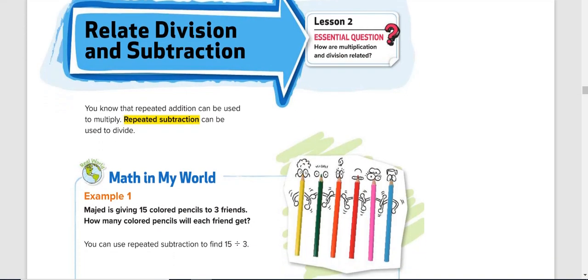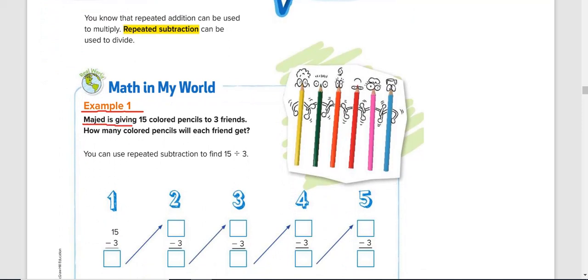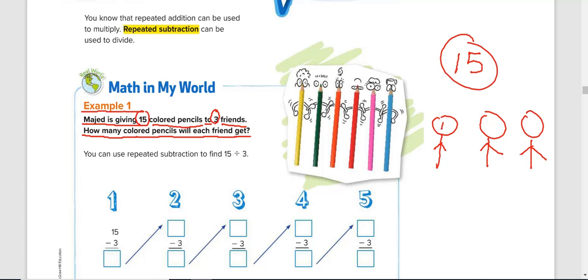Okay, so let's take a look at this example, example number one. Majid is giving 15 colored pencils to three friends. How many colored pencils will each friend get? So there are three friends.